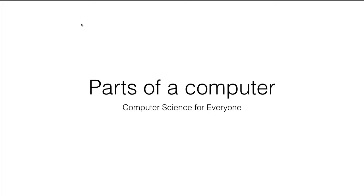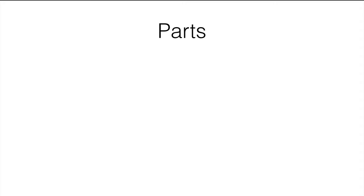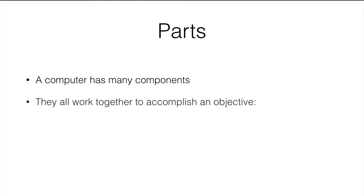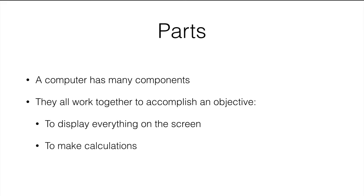Parts of a computer. A computer has many components, and they all work together to achieve an objective. The objectives are usually to display things on the screen — the things you want to see — and to make calculations. Everything else can pretty much be derived from this.